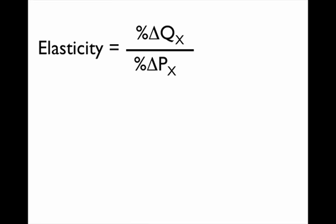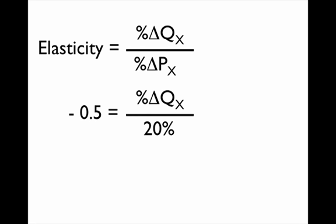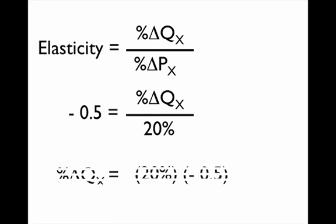Here's how you answer: the equation for elasticity is the percentage change in quantity divided by the percentage change in price. We know the elasticity is -0.5 and the price increase is 20%, so we solve for the percentage change in quantity by multiplying 20% times 0.5, giving -10%. This confirms inelastic demand: when price goes up 20%, demand goes down by only 10%.